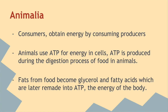In animals, consumers obtain energy by consuming producers. Animals use ATP for energy in cells. ATP is produced during the digestion process of food in animals. Fats from food become glycerol and fatty acids, which are later remade into ATP — the energy of the body.